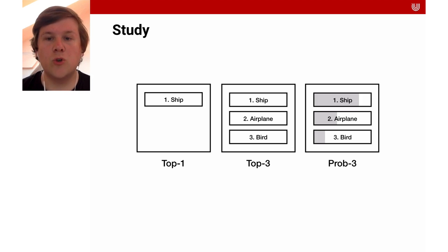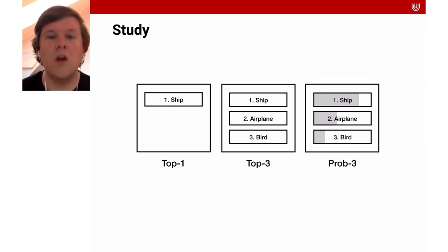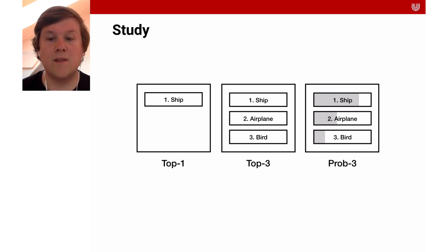Top Three shows the top three predictions ranked by their probability. We hypothesized that Top Three would allow participants to make a more informed decision about ML systems, since participants can use the ranking to compare the predictions. Prob Three shows the same ranking and visualizes the probability of each prediction using a bar. The probabilities are based on the activation of the softmax unit of the convolutional neural network, representing the probability distribution over ten different classes. Prob Three was selected since it exposes that ML systems operate in the regime of probabilities and correlations.